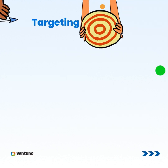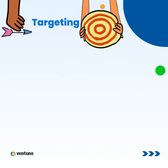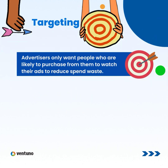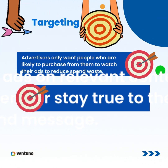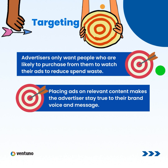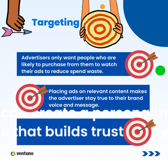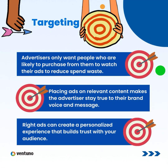Why does targeting matter in advertising? Advertisers only want people who are likely to purchase from them to watch their ads, in order to reduce spend waste. Also, placing ads on relevant content makes the advertiser stay true to their brand voice and message. As an OTT service, placing the right ads can create a personalized experience for your audience.